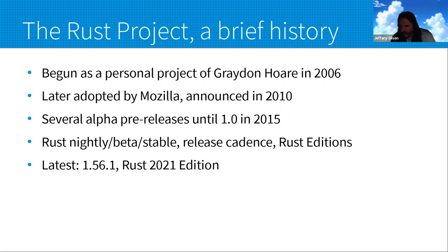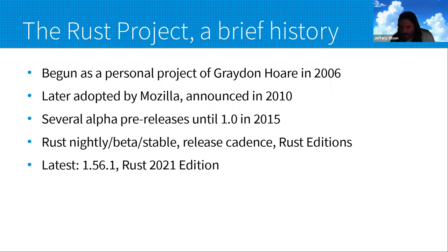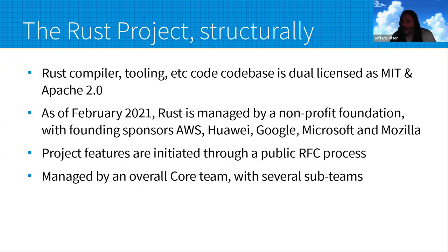Rust also periodically releases additions called editions that represent breaking changes compared to previous editions. When Rust 1.0 was released, the Rust 2015 edition was released at that time. Regardless of the version, all prior editions are supported in the compiler and individual crates opt into which edition they support. The latest Rust edition is 2021, which was debuted at the same time as the most recent Rust release, 1.56, in late October. Rust is an open source project developed out in the open on GitHub.